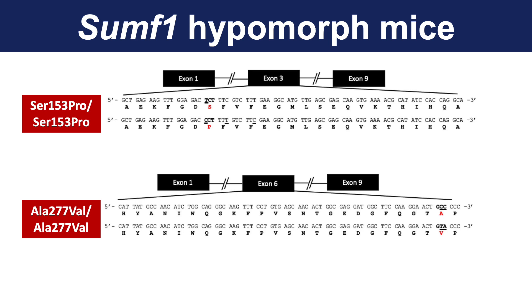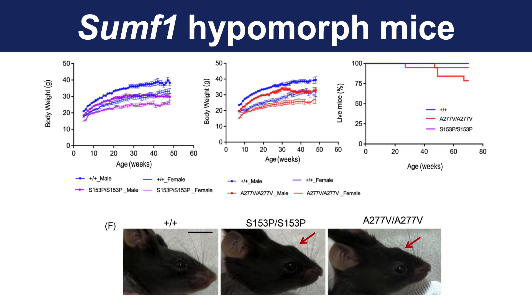By CRISPR-Cas9, we generated mice that are homozygous for both of these variants. These mice appeared to be relatively healthy with only a shorter lifespan compared to controls, and mild reductions in body weight, as shown from the growth charts of the mice.